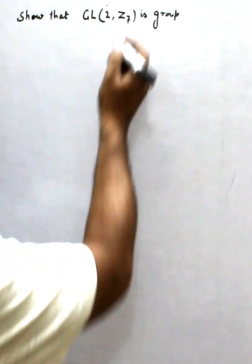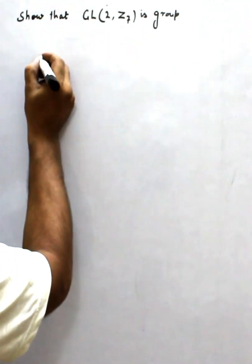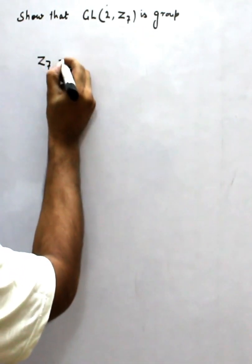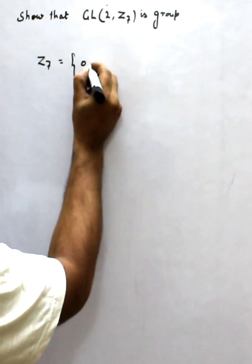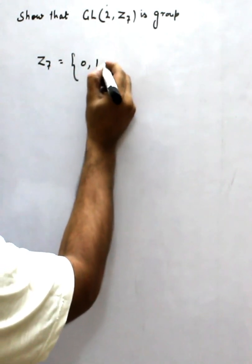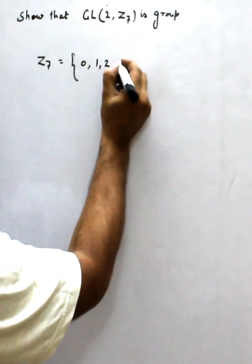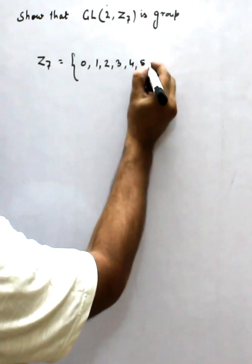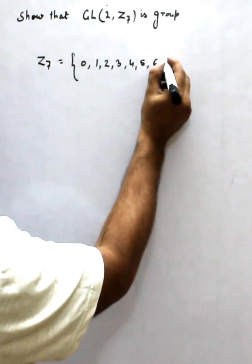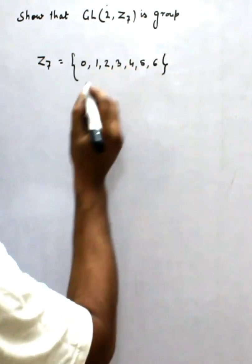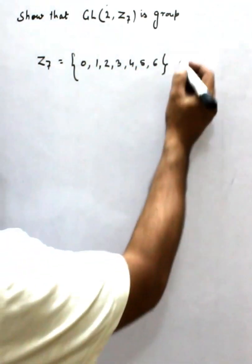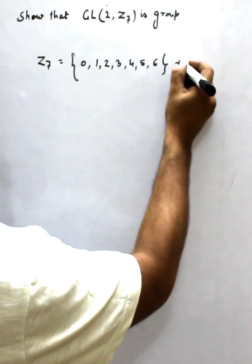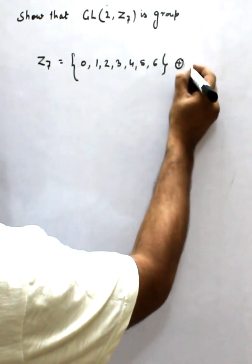First we say what is Z₇. Z₇ has the elements 0, 1, 2, 3, 4, 5, 6, and the operation is addition modulo 7.